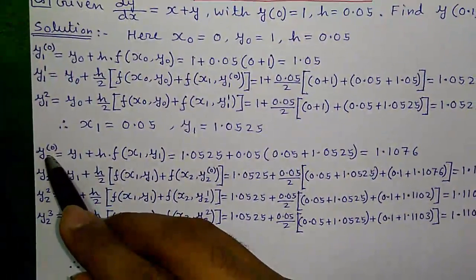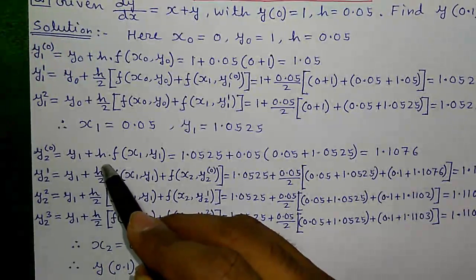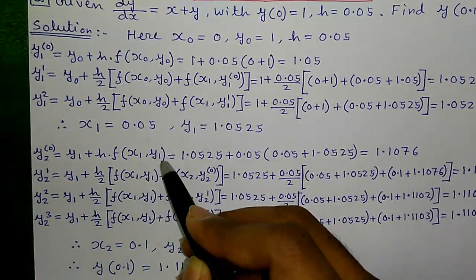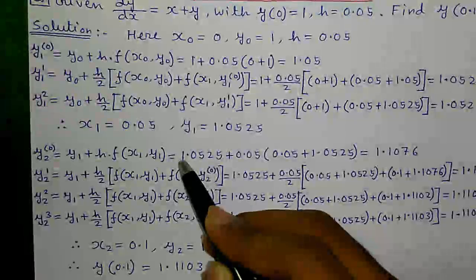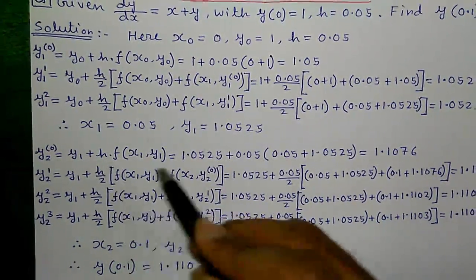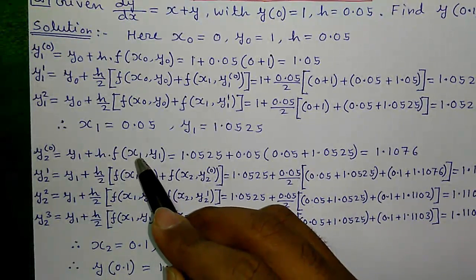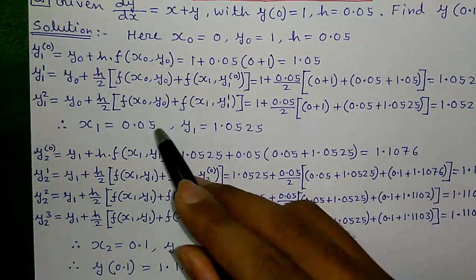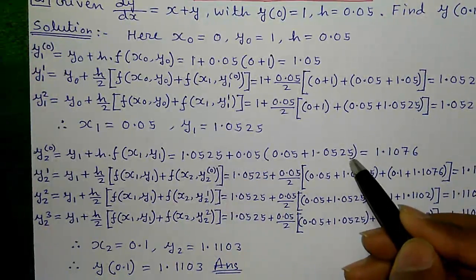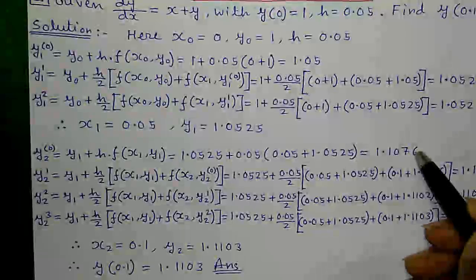Next, the second iteration predictor: y2(0) equals y1 plus h into f(x1, y1), which equals 1.0525 plus 0.05 into (0.05 plus 1.0525), giving y2(0) equals 1.1076.